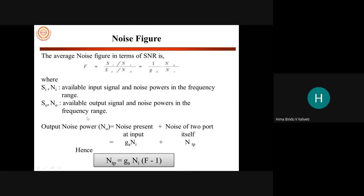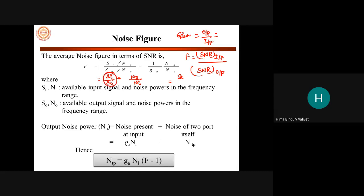The average noise figure is SNR at input divided by SNR at output — that is (Si/Ni) divided by (S0/N0), which can be rewritten as (Si/S0) × (N0/Ni). Since gain is output power divided by input power, Si/S0 is 1/GA. So noise figure F = (1/GA) × (N0/Ni) for a single two-port network.